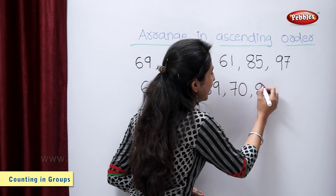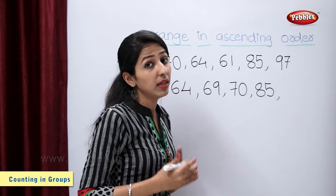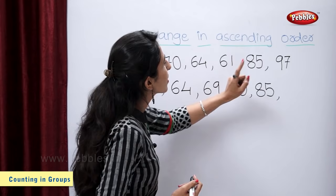Which number will come after number 85? Let's find out. Number 97.